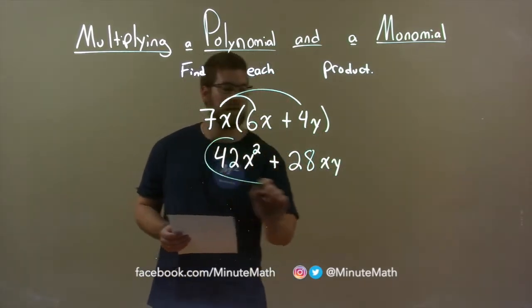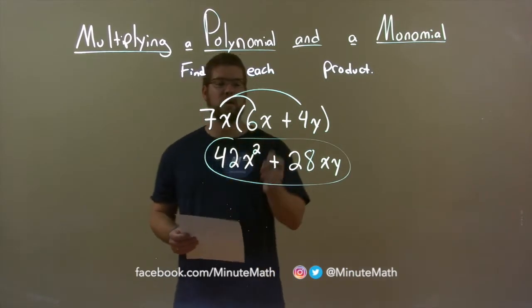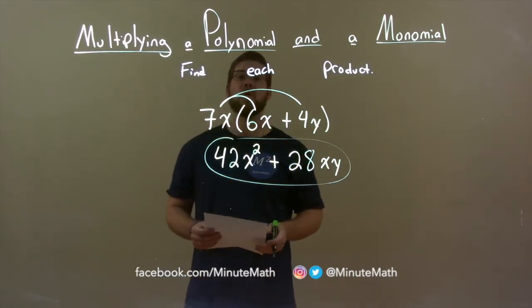And there we have it. Our final answer, 42x squared plus 28xy.